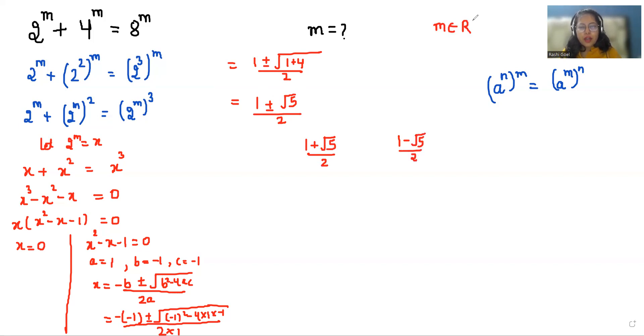As we know that m belongs to real numbers and √5 value is greater than 1, so (1 - √5)/2 will give us a negative answer, so we reject this case. We are going to use (1 + √5)/2.